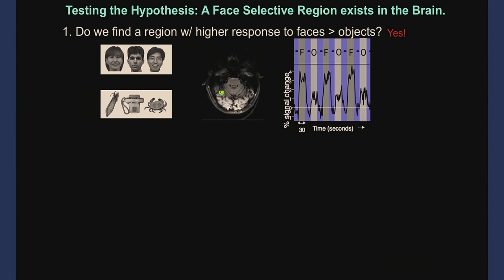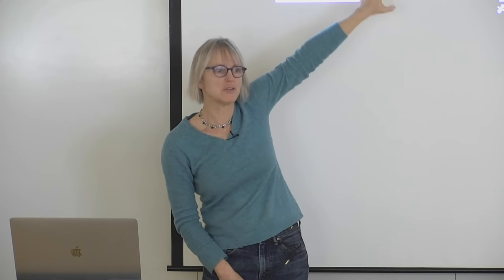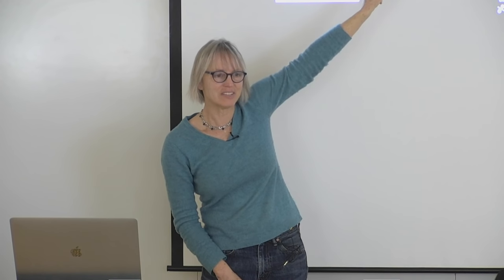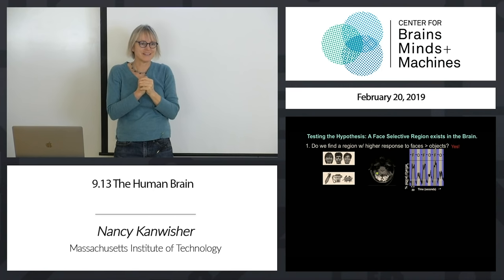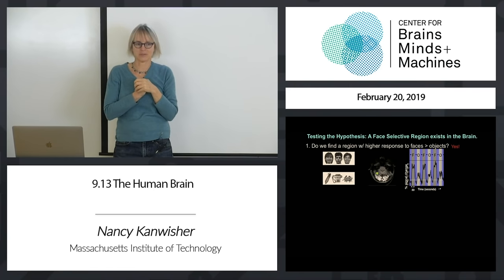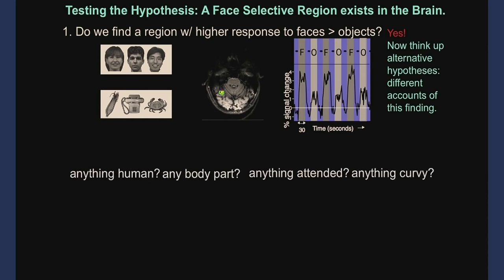That's just the whole kernel of scientific thinking: ask yourself, is there any other way we could get those data where that hypothesis wasn't true? If so, you've got to grapple with it. So what you do next is think of alternative hypotheses — different accounts of the same data. In our case, you and I suggested a whole bunch. The next thing I showed is that we can test those alternative hypotheses by relocalizing that region in a new bunch of subjects — finding in each subject individually the region that does this, then asking it new questions.